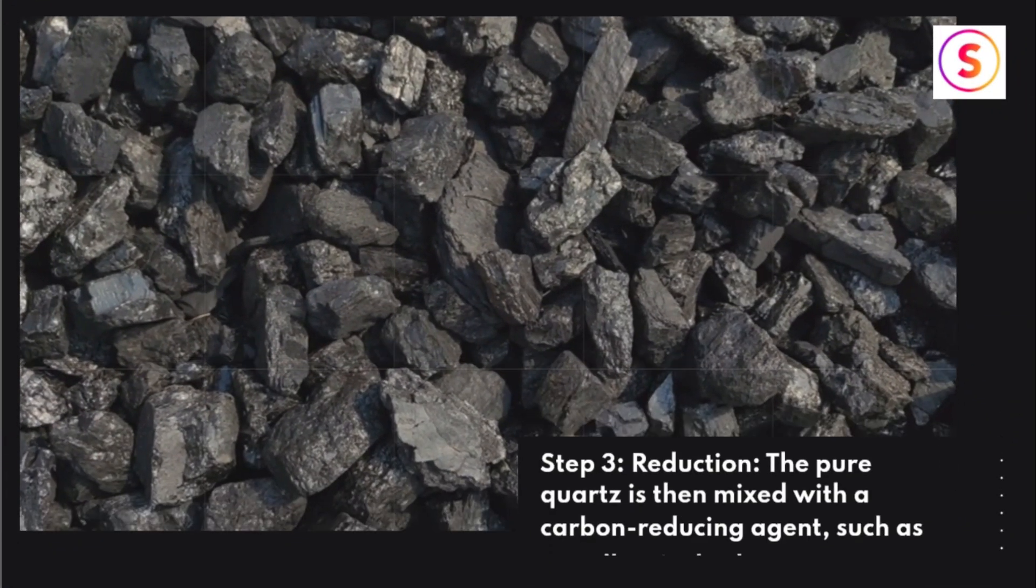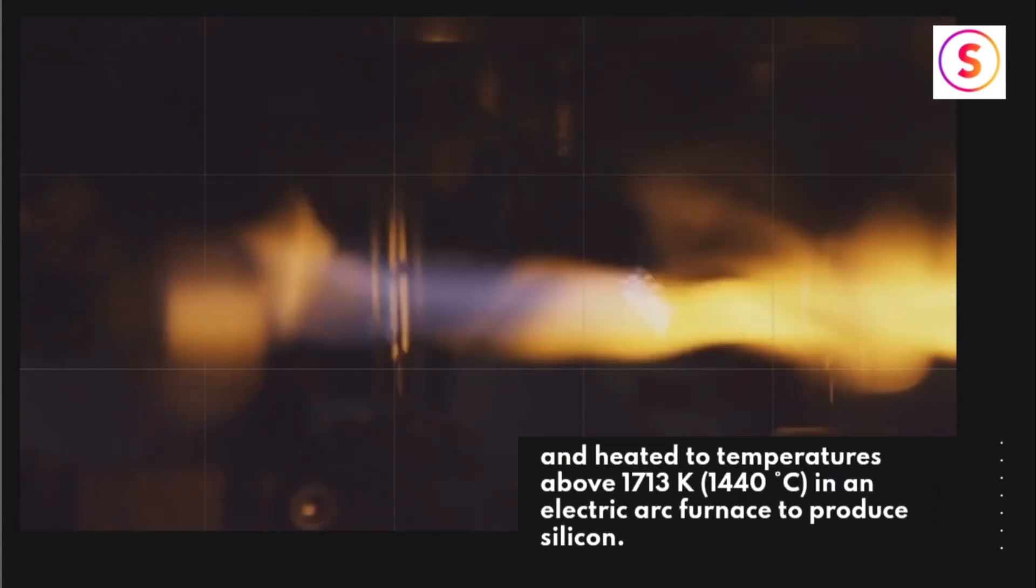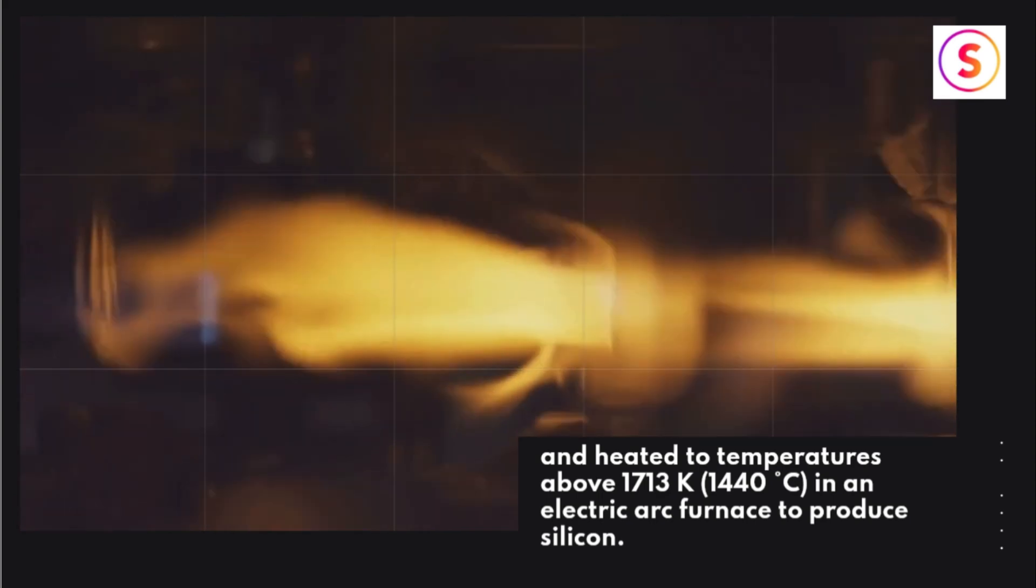Step 3: Reduction. The pure quartz is then mixed with a carbon-reducing agent, such as metallurgical coke, and heated to temperatures above 1713 K in an electric arc furnace to produce silicon.